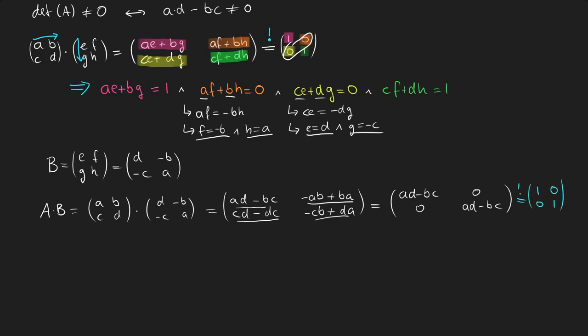And remember from our task, we wanted this matrix to equal 1, 0, 0, 1. So we've already got those zeros covered. Now we need to deal with those ones. And well, how do we get a 1 here and a 1 here? Because both values are the same and we have zeros on the other diagonal, we can just divide every value of this matrix by AD minus BC.